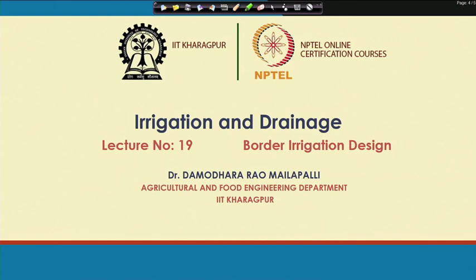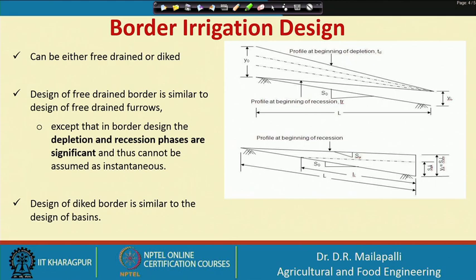Friends, welcome to lecture number 19. This is exclusively on border irrigation design. In the previous lectures we have been talking on furrow irrigation system and furrow irrigation system design. In this lecture we will focus more on border irrigation. In furrow irrigation, the depletion phase and resistance phases were neglected. In border irrigation we are going to consider those two phases in addition to advance and storage phases.